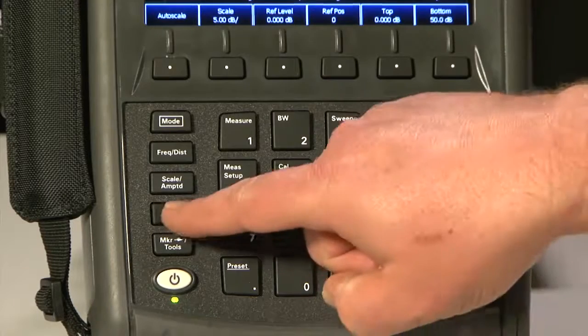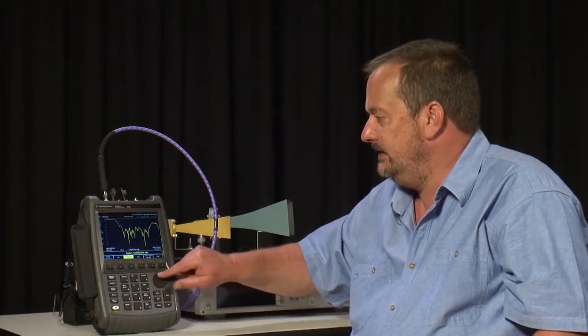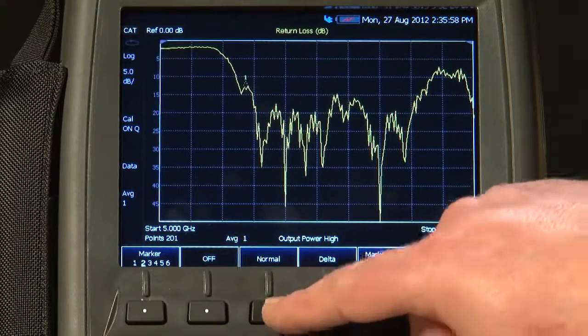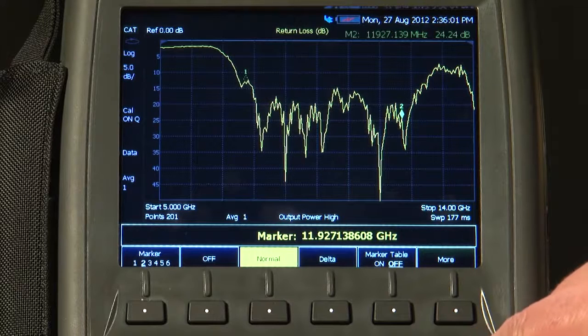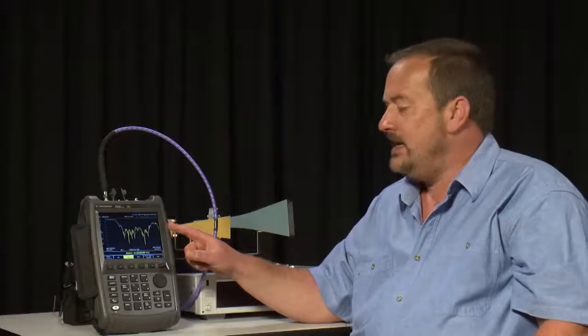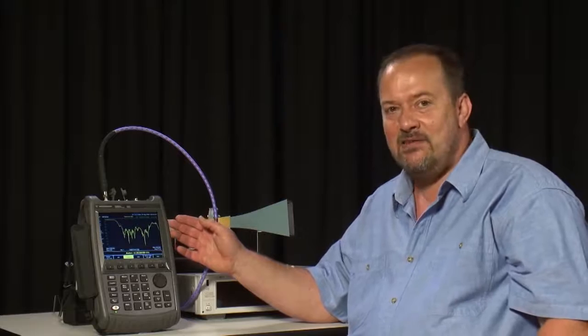And as you would expect, we can press the marker button and turn on some markers. Turn on marker 1, and let's turn on another marker. And of course, we can now save that display on to a USB memory stick or SD card and include it in a report.